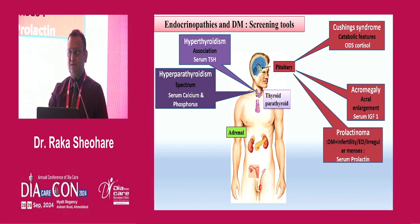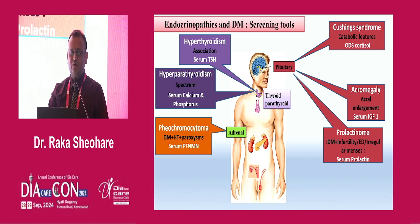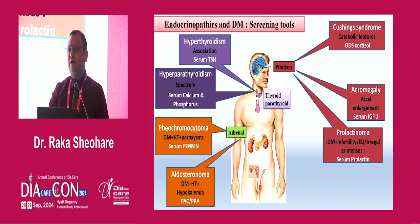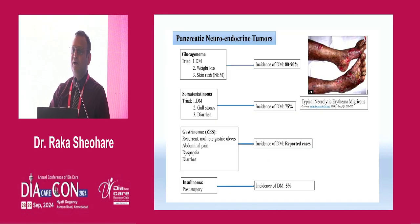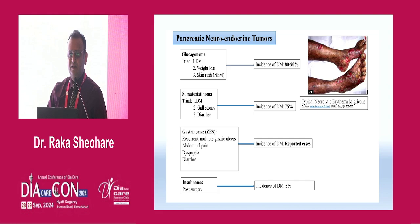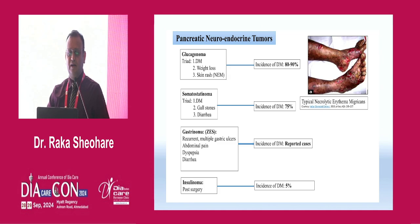For hyperparathyroidism, check serum calcium and phosphorus. For pheochromocytoma presenting with diabetes and hypertension with paroxysmal undulating blood pressure, go for urinary metanephrines. For aldosteronoma presenting with hypokalemia, go for plasma renin activity and plasma aldosterone concentration for a clinical clue. For pancreatic neuroendocrine tumors — glucagonoma, somatostatinoma, gastrinoma, insulinoma — a clinical clue is necrolytic migratory erythema or acanthosis nigricans. If this skin presentation is present, don't send the patient directly to a dermatologist — suspect an underlying pancreatic tumor.